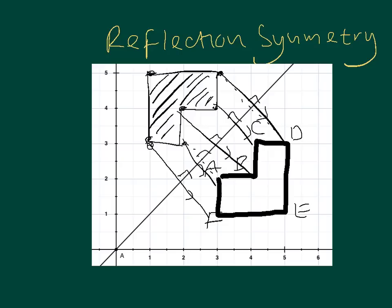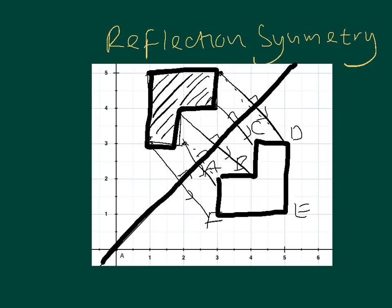OK, so that, I'll just shade it in a little bit thicker. That is our final shape. Trace it out there. And that's symmetry through a diagonal line.